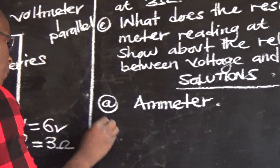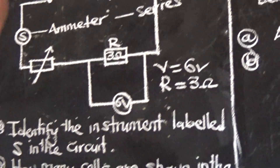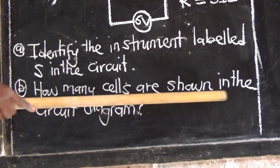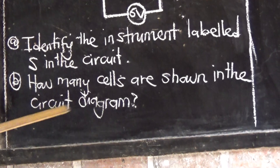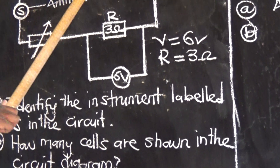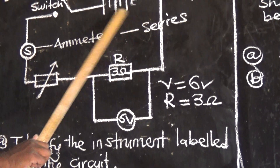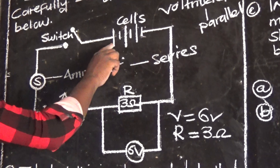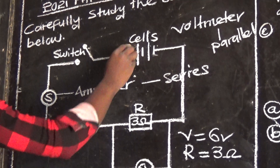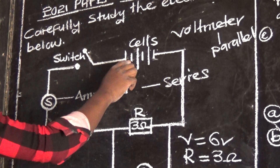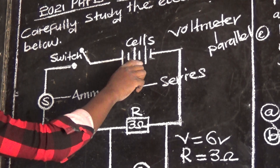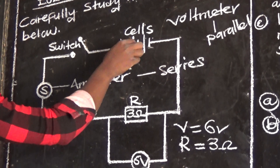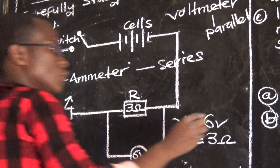Question B says: how many cells are shown in the second diagram? The number of cells — we count: positive-negative, that's one; positive-negative, two; positive, three. So there are three cells.